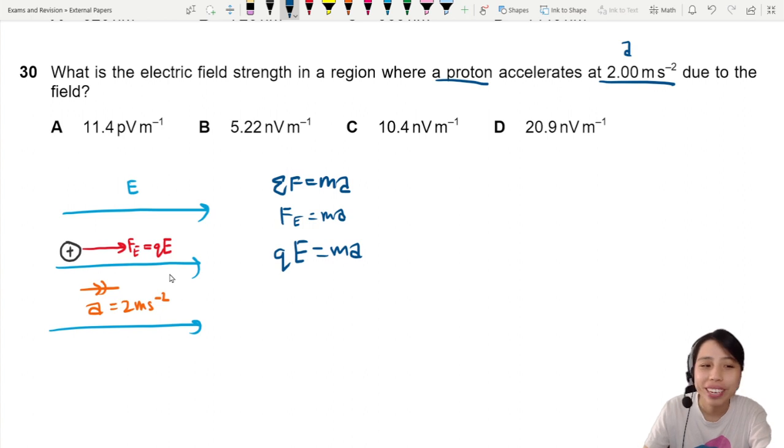Now we plug in everything we know. Q of the proton, proton charge is generally positive one E and E is a constant. So that'll be 1.6 elementary charge, 1.6 times 10 to the negative 19. E we don't know, we just leave it there.